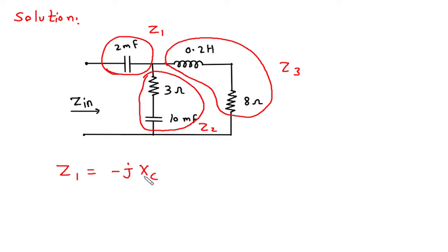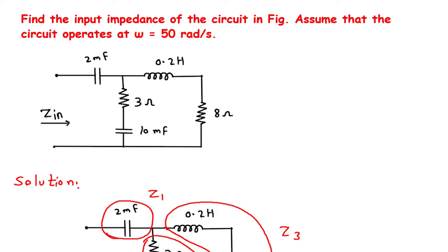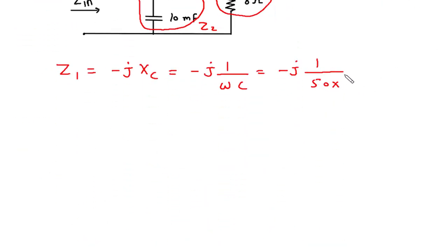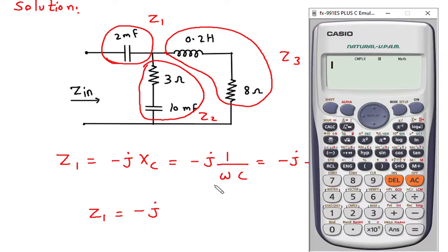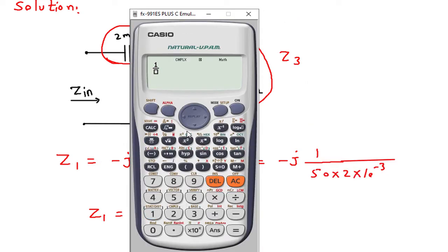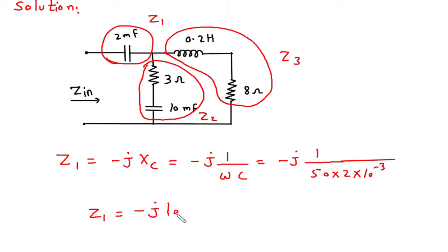So Z1 will be minus j·XC, where XC is the capacitive reactance. The formula for XC is 1/(ω·C). So this will be minus j into 1/(ω·C). Omega is given as 50 rad/s and capacitance is 2 mF, so 2×10⁻³. Therefore Z1 = −j10 ohms.